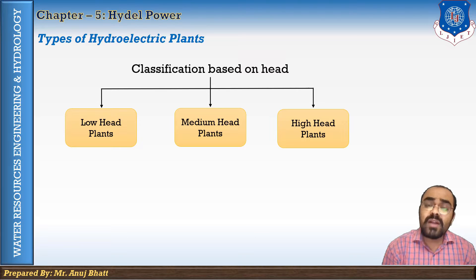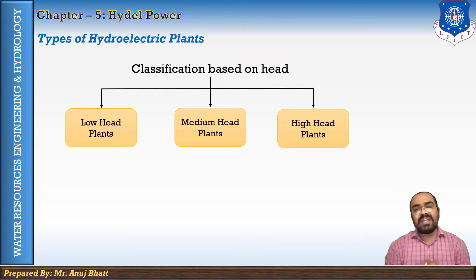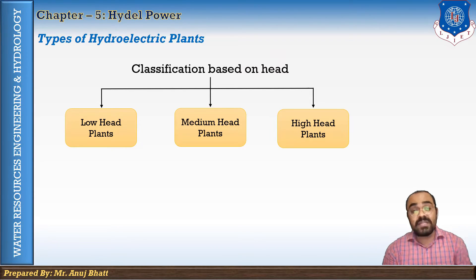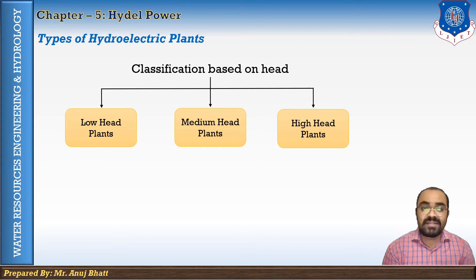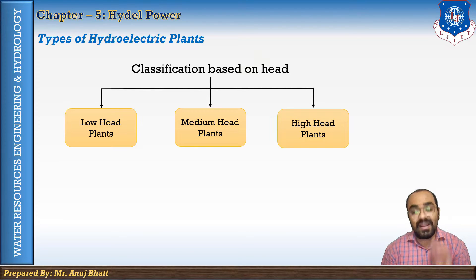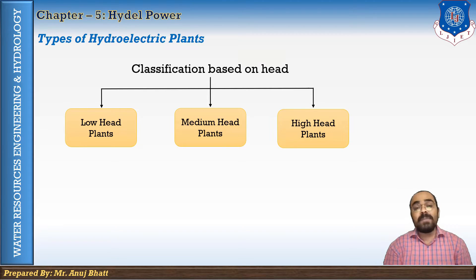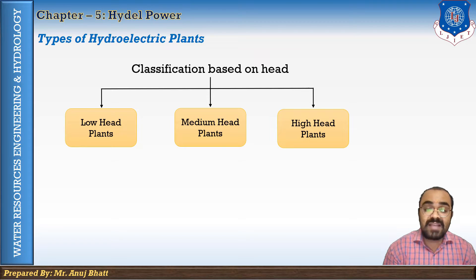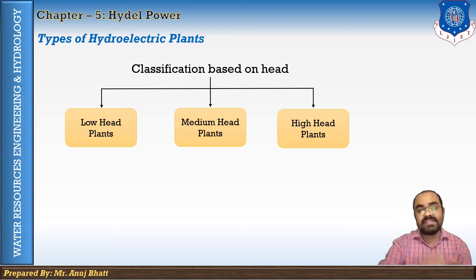Sometimes the barrage is constructed some distance upstream of the powerhouse and water is conveyed to the powerhouse through an intake canal. A medium head plant uses a head between 15 to 60 meters. Such a scheme is essentially a storage scheme where a dam is constructed to store water and obtain the required head. A medium head scheme has features midway between the low head and high head schemes.